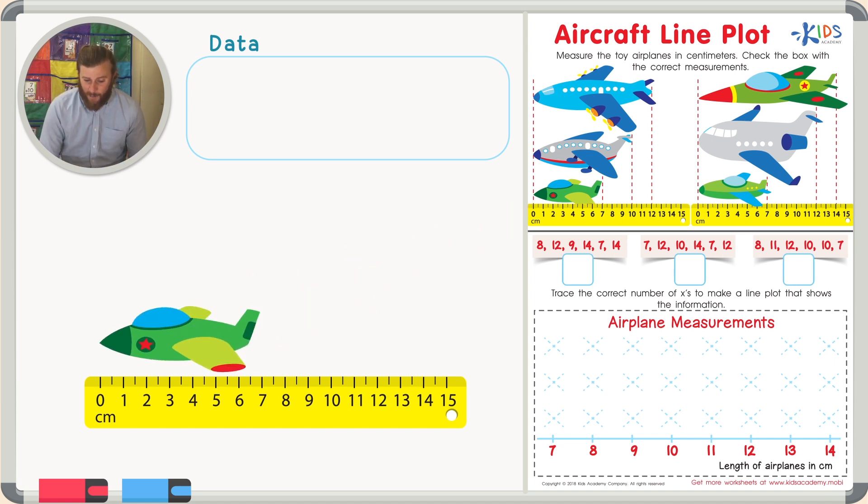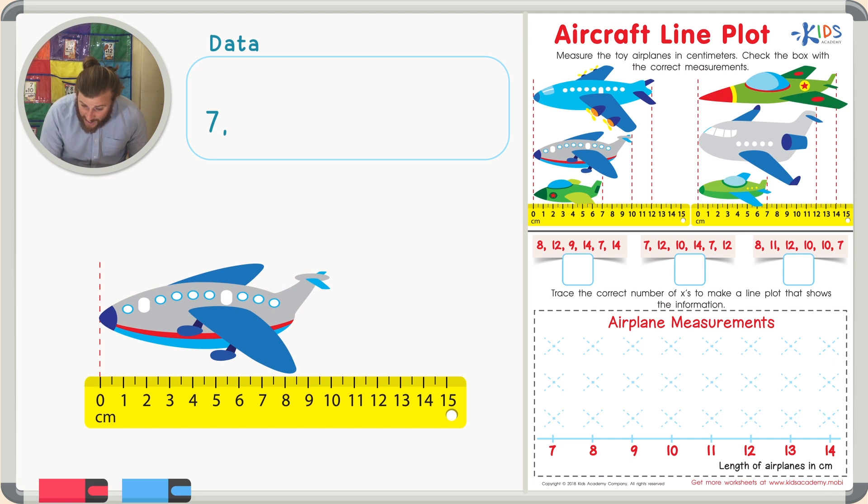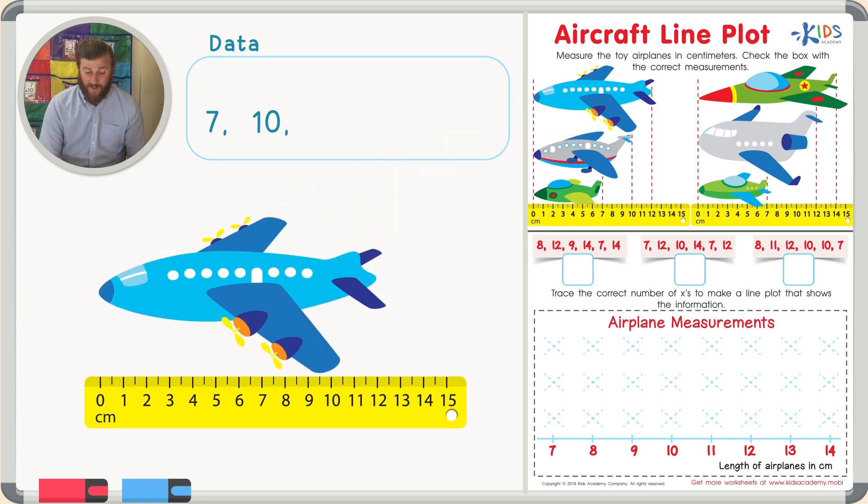So I see our first green airplane. It starts at zero and it ends at seven, so I know our first green airplane is seven centimeters long. Our second airplane, the gray airplane, starts at zero centimeters and it ends at 10 centimeters. So I know I have an airplane that's 10 centimeters long. And our final airplane on this side starts at zero centimeters and ends at 12 centimeters. So I know I have an airplane that's 12 centimeters long.